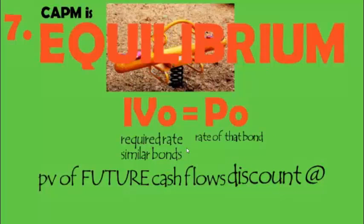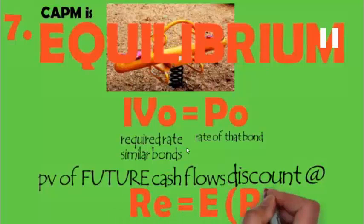So it is an equilibrium model, equilibrium model where IV zero equal to P zero, or I must say the expected return is equal to the required rate of return. So CAPM's important assumption is an equilibrium model.